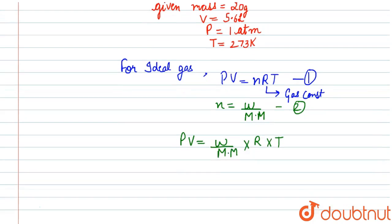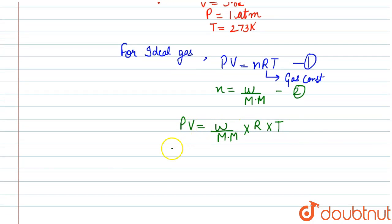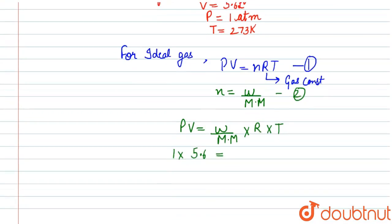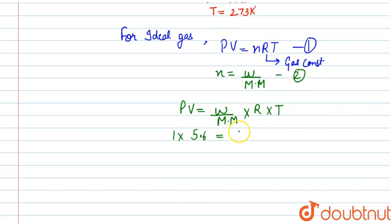Now we will substitute the values. Here pressure is 1 atmosphere, volume is 5.6 liters, and we are given the weight that is 20 grams, and we have to find the molar mass.